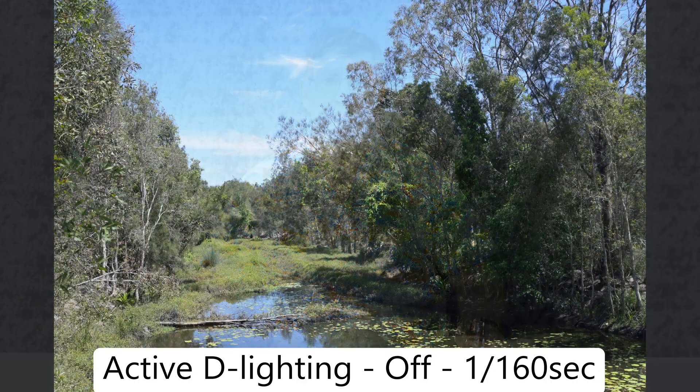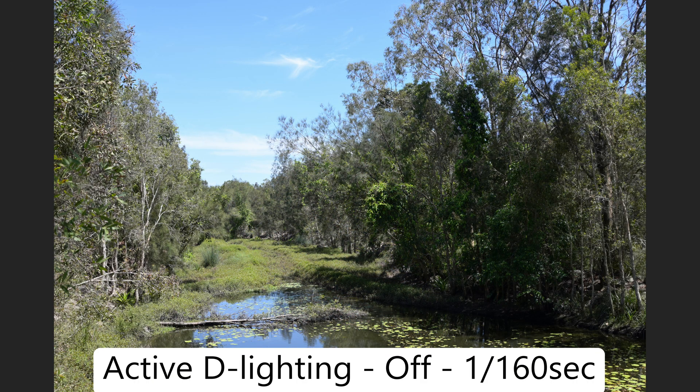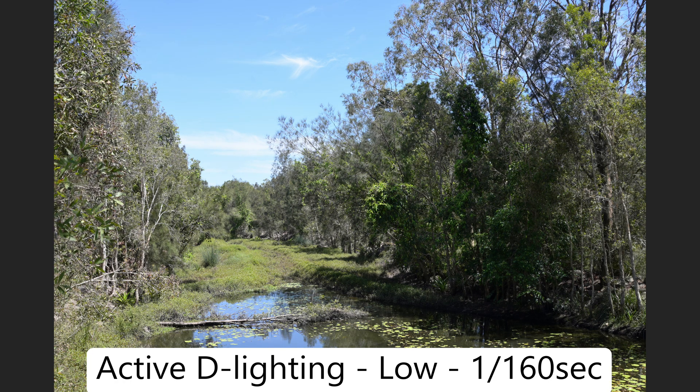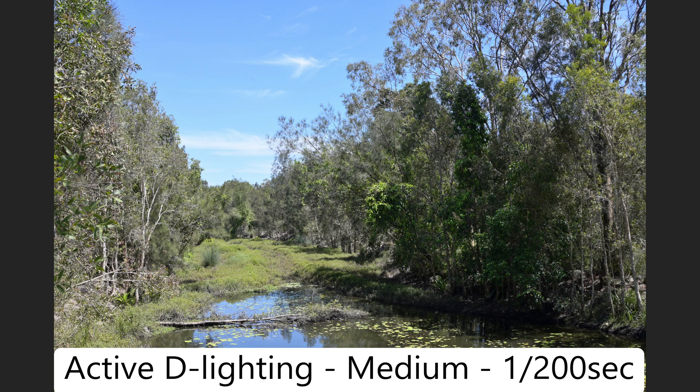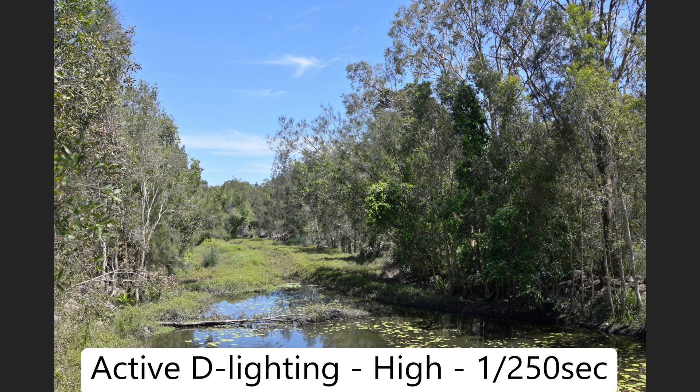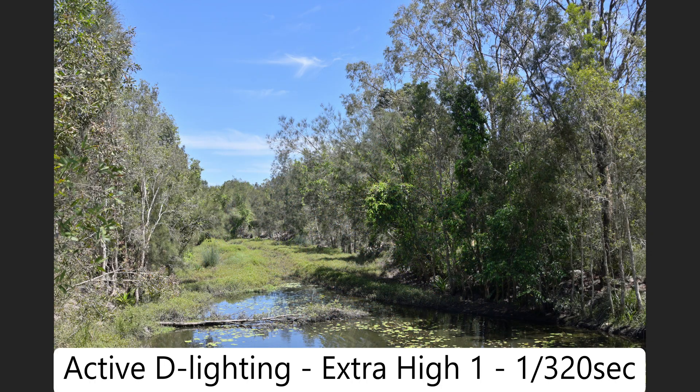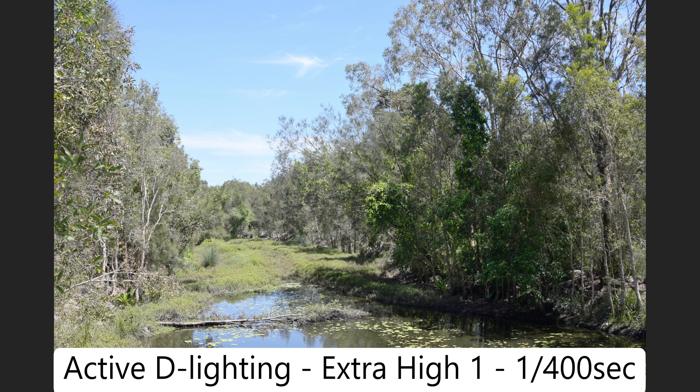Now let's look at the images taken in aperture priority. Active D Lighting is off at 1/160th of a second. At low, it hasn't changed at all — still 1/160th. Now at medium, it's 1/250th of a second, showing there is more light hitting our sensor. Active D Lighting is trying to balance out the shadows. At extra high 1 it is 1/320th of a second. Now look at extra high 2 — it has brought a lot more light trying to balance the dark shadows, and our shutter speed has gone up.